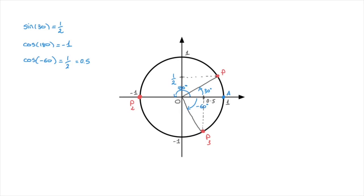And there we have it. Do remember all that the cosine and sine functions are — they are functions which give us both the horizontal and vertical coordinates of a point P as it moves around a unit circle. That's it for this tutorial.